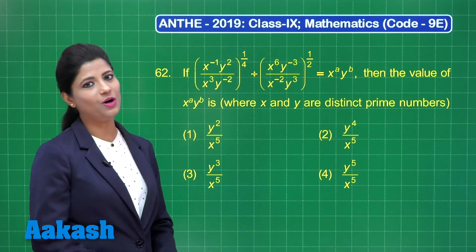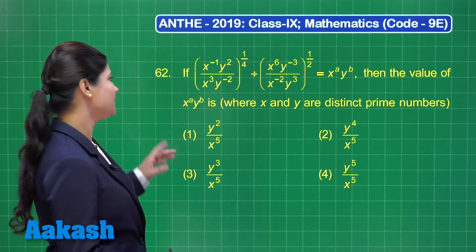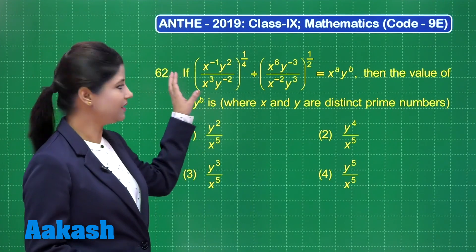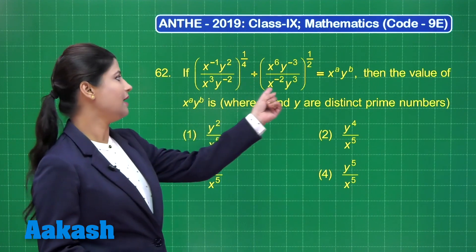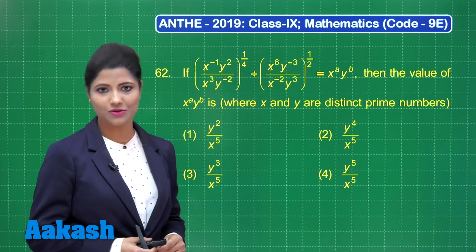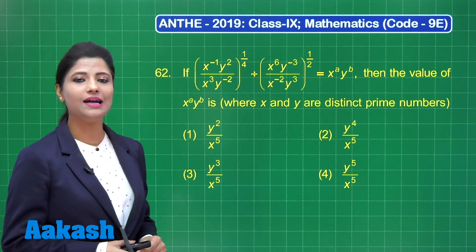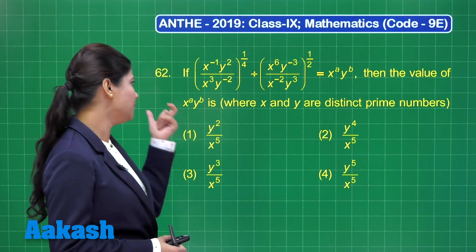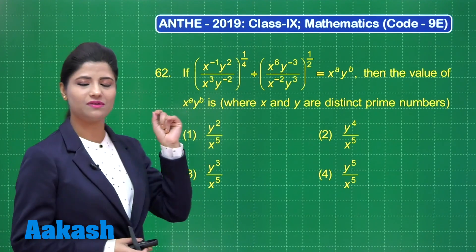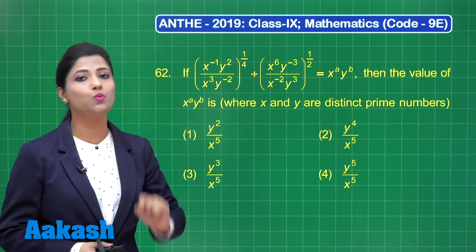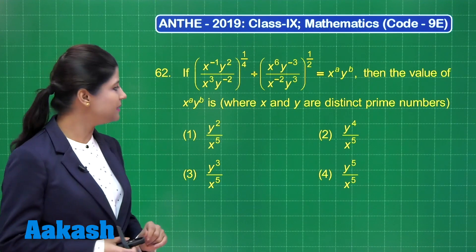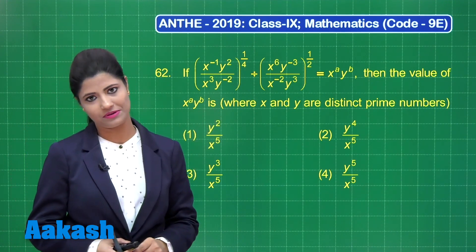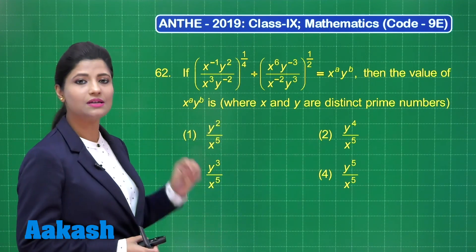Question number 62 states that given the expression where on the right hand side you have x raised to the power a into y raised to the power b, find the value of x^a · y^b, where x and y are distinct prime numbers. You have these 4 options.